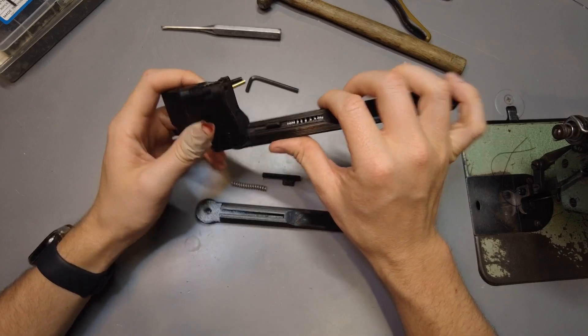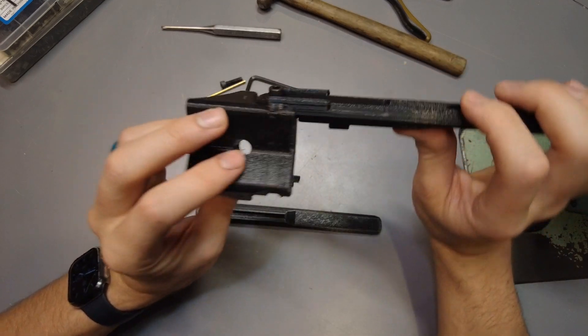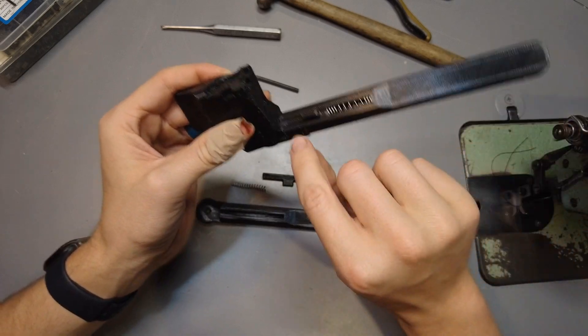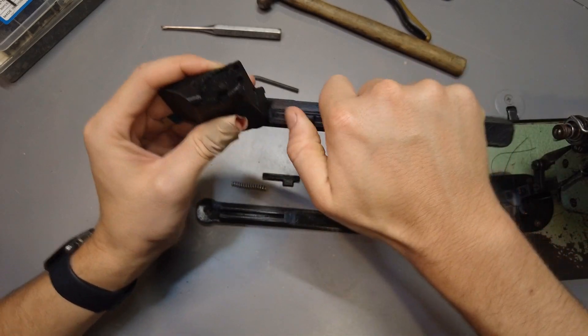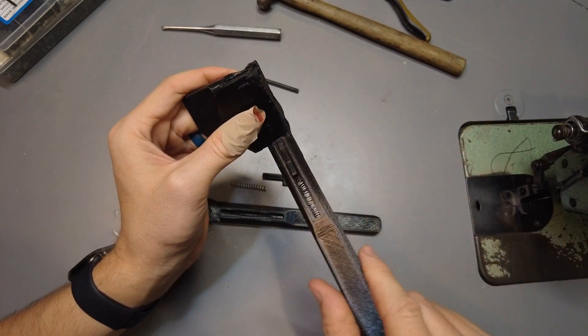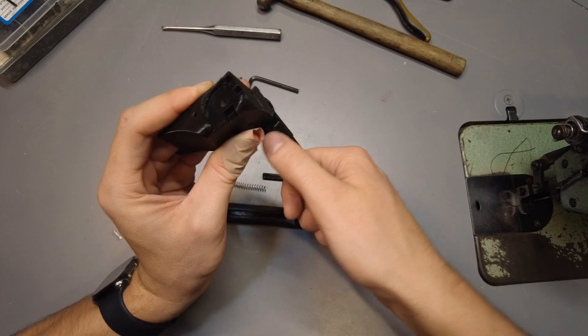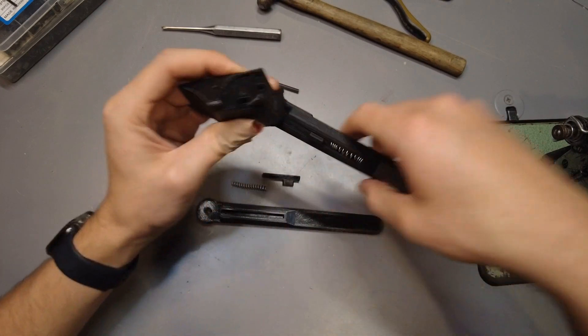So the way it works is you just have your legs that pivot on this main body here, and you have this locking key right here that you pull down and it pops up and locks in the two positions, either down or folded.